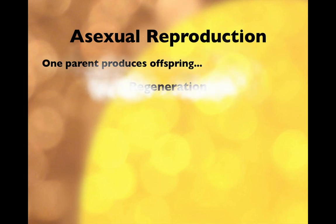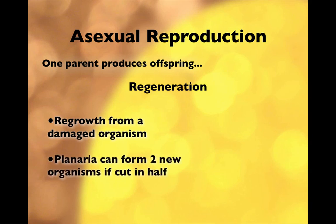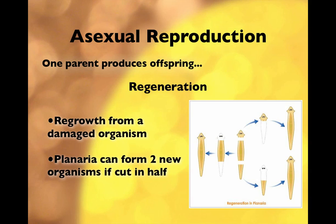The last type of asexual reproduction is regeneration — not quite as common. A damaged organism can regrow parts, like a starfish regrowing a lost leg, but that's just regeneration, not reproduction. However, some organisms actually reproduce this way. A planaria — a little funny-looking worm — if you cut one in half, it grows two brand new organisms. Cut into three parts: the head grows a tail, the tail grows a head, and the center grows both head and tail. Pretty good trick — glad it doesn't work for humans.